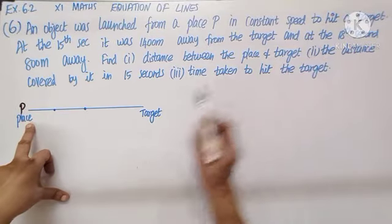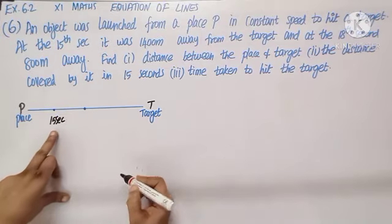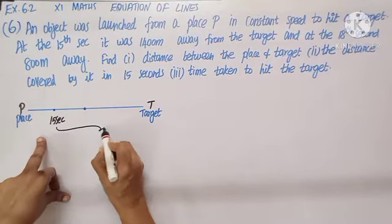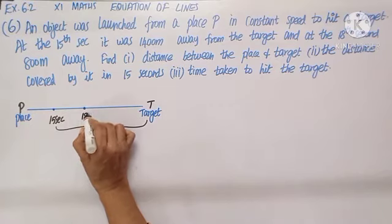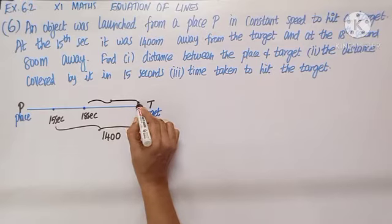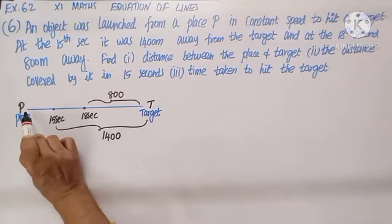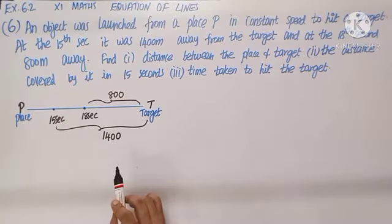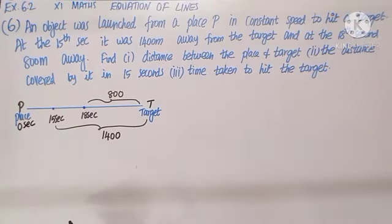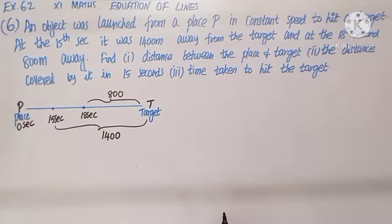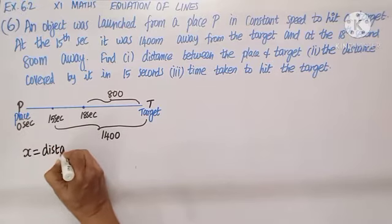At the 15th second the distance from the target is 1400 meters, and at the 18th second the target is 800 meters away. Find the distance between the place and the target. As time passes the object moves toward the target; at the initial time zero seconds, we need to find the initial distance. Let us use the two-point formula, taking X as the distance and Y as the time.